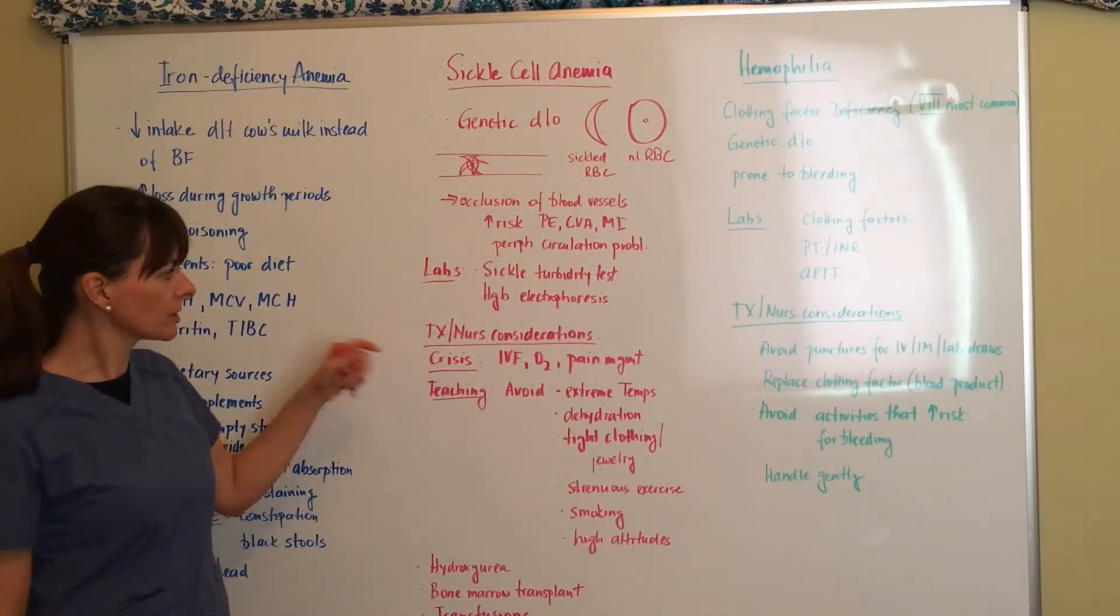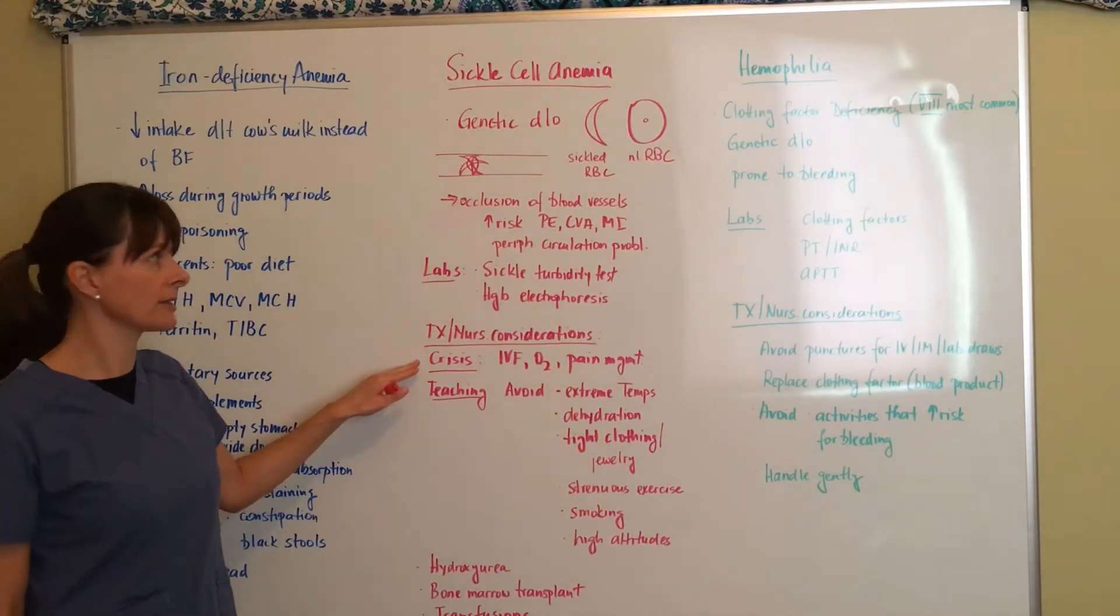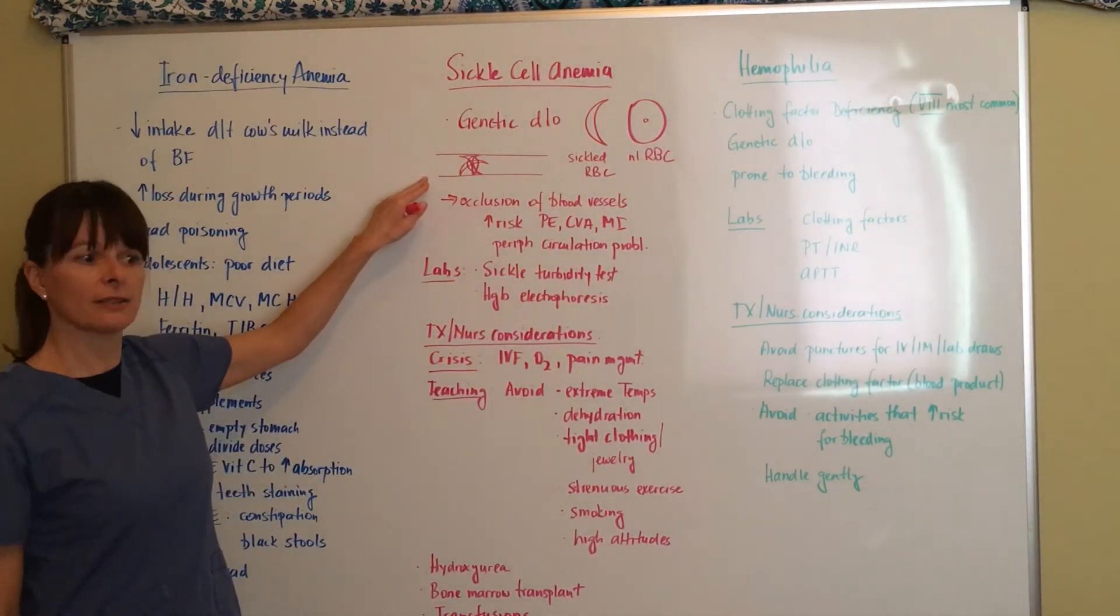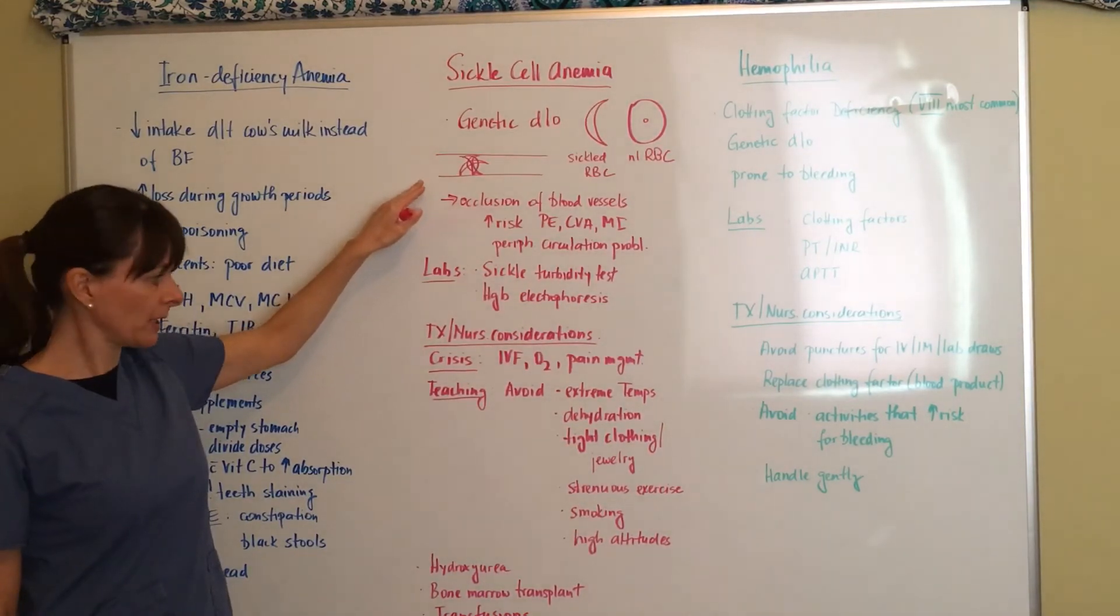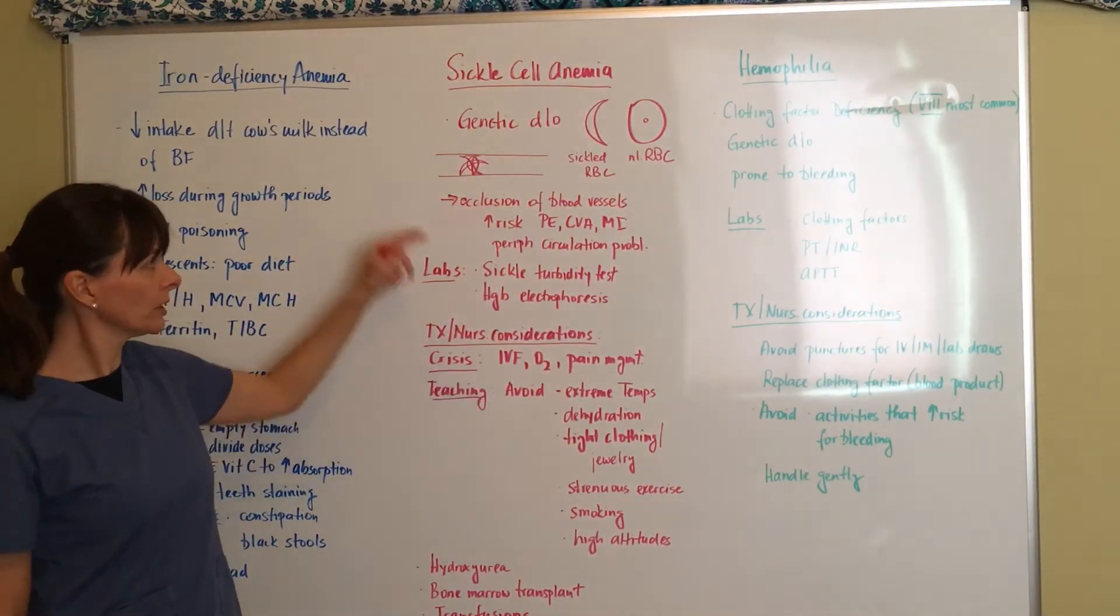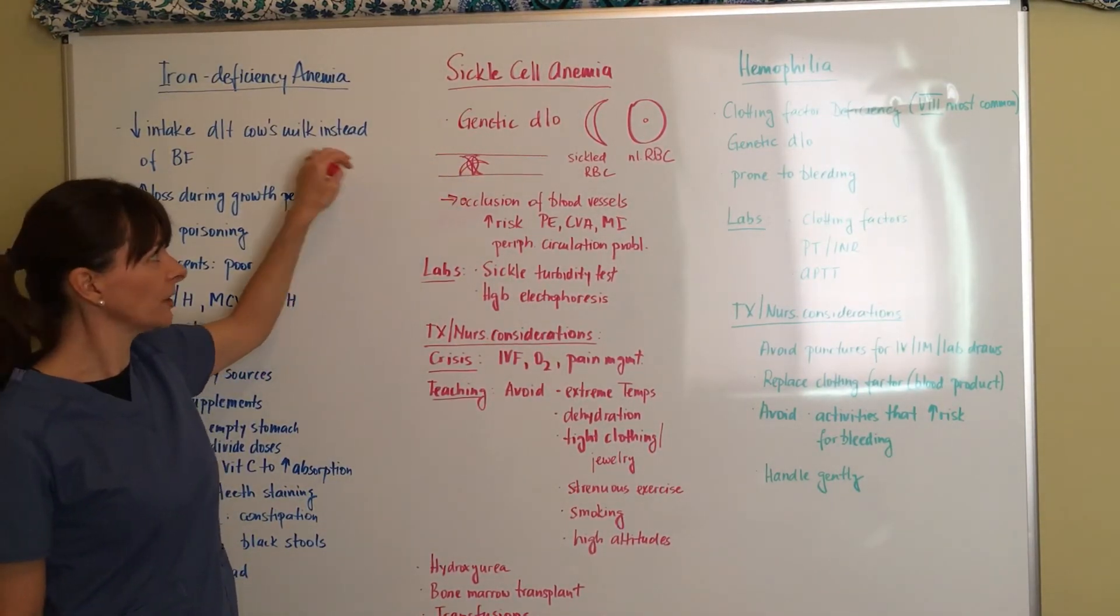Now treatment and nursing considerations. If the patient is in an acute sickle cell crisis, the sickle cells have clumped together and caused this occlusion. The best management is IV fluids to dilute this clot and cluster of blood cells. Give them fluids, make them flow along.